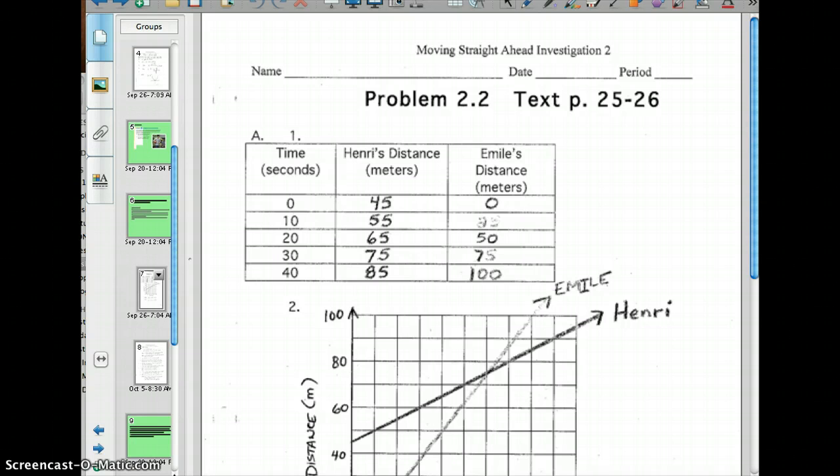If you look here on the table, question A1 asks us to complete the table, which you did in Google Docs yesterday in class. Notice how at time 0 seconds, Henry's at 45 meters, that's his head start, and then Emil, who didn't get the head start, is at 0.